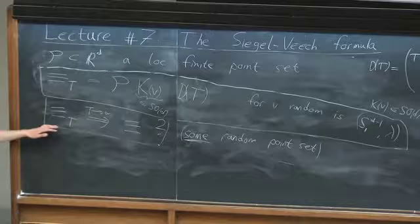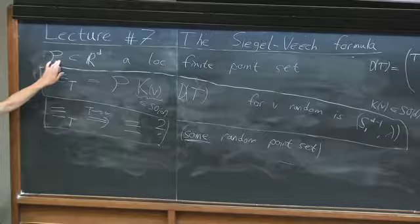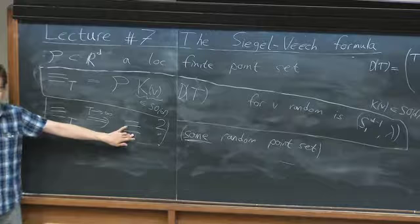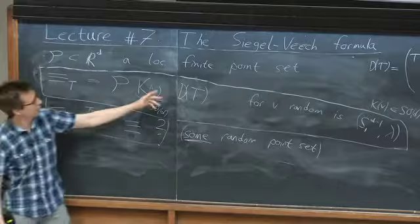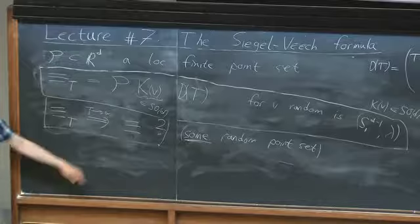What Jens showed yesterday is that if you start with P being a lattice, then ψ_T converges in distribution and the answer is a random lattice. Tonight we will start discussing the case when P is a fixed quasicrystal and prove that in certain cases we also get a describable answer.